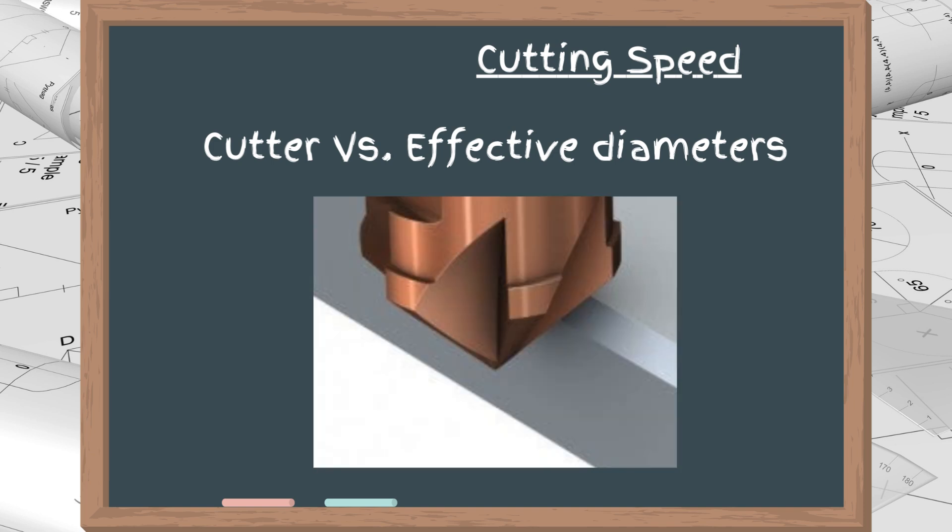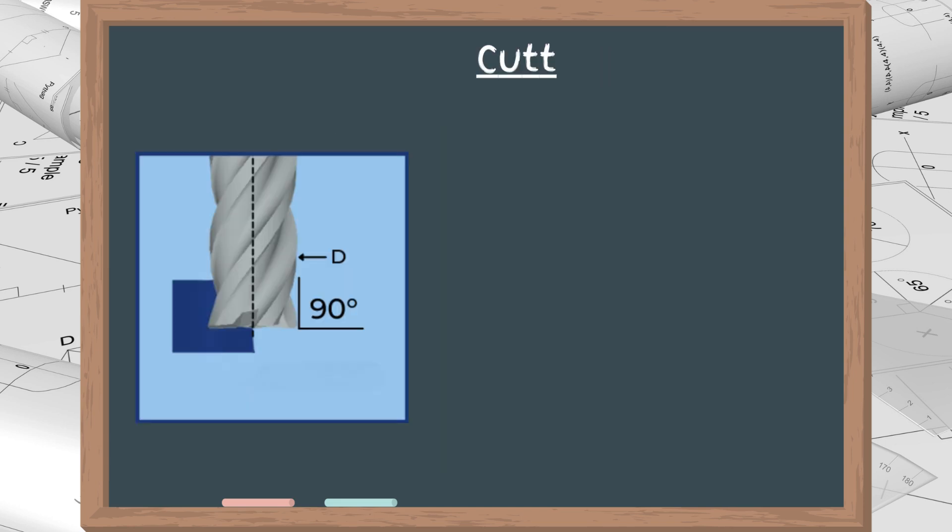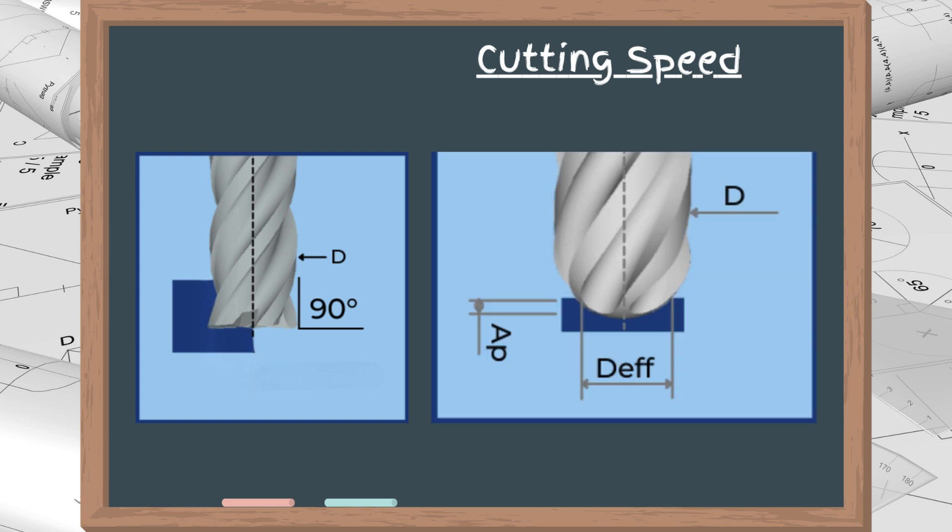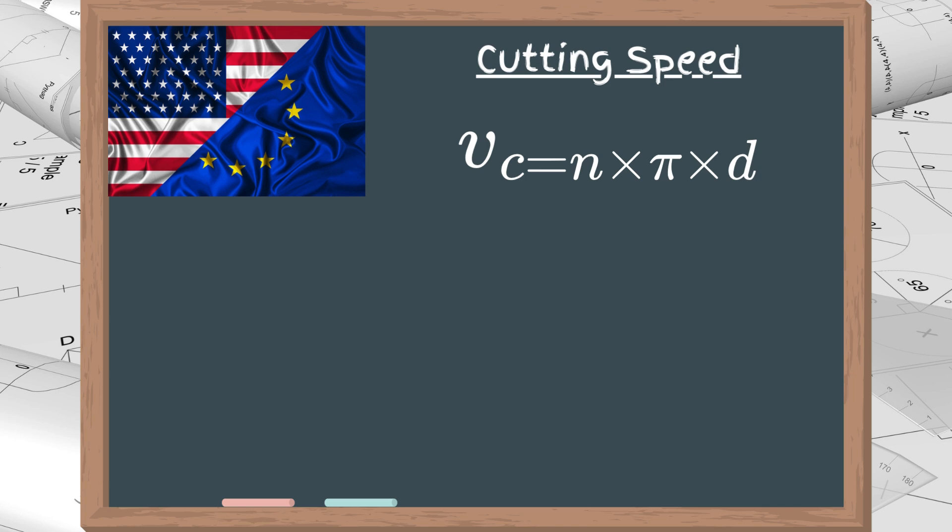The effective diameter is the diameter at which the cutter makes contact with the workpiece. In 90 degrees mills, both have the same value. However, on round and chamfer cutters, the effective diameter depends on the depth of the cut. Lastly, we have to factor the result to match the Vc units.